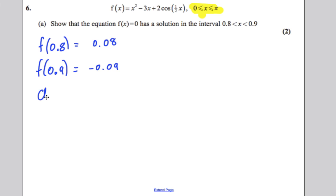So therefore, if we have a change in sign, you must say that f is continuous and therefore root between 0.8 is less than x is less than 0.9. Probably the easiest two marks on the paper.